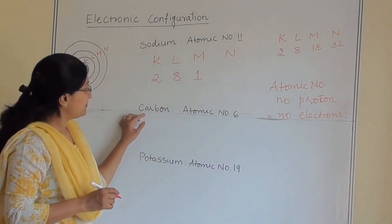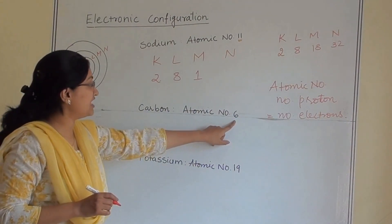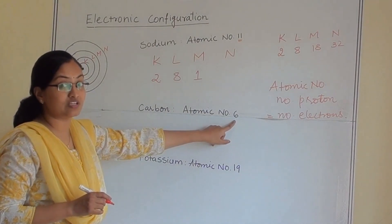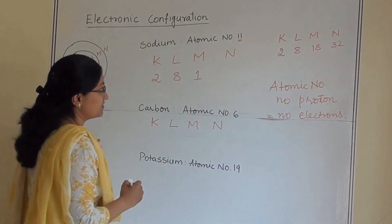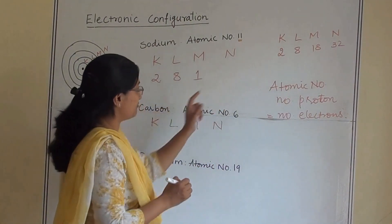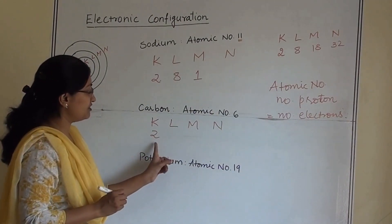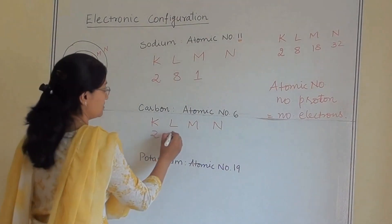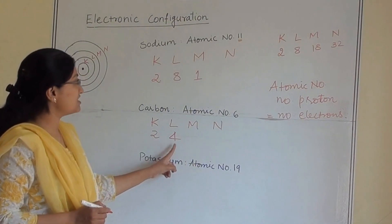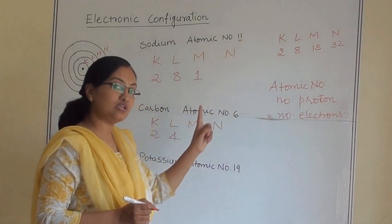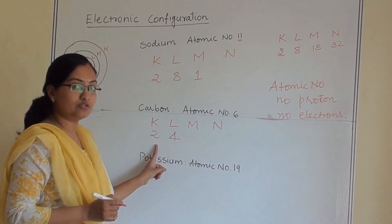Now for carbon, the atomic number is 6, so there are 6 electrons. In K, we place 2. Four electrons remain. The maximum capacity of L is 8, and 4 is within that limit, so we place 4 in L. Carbon's electronic configuration is 2, 4.